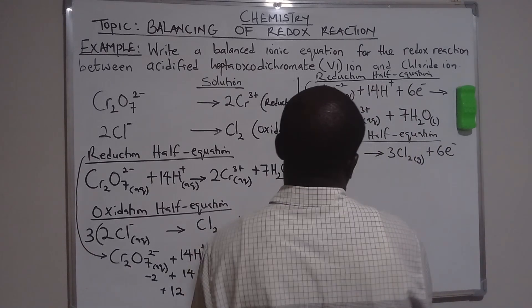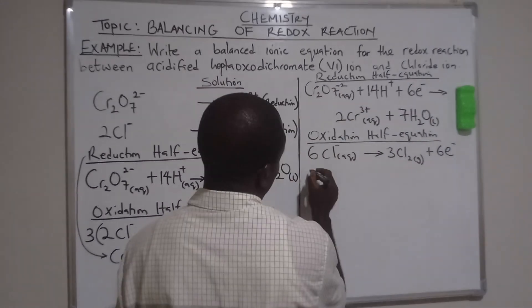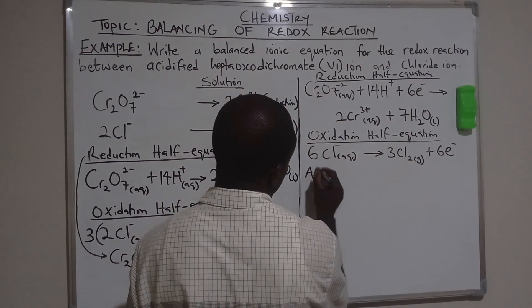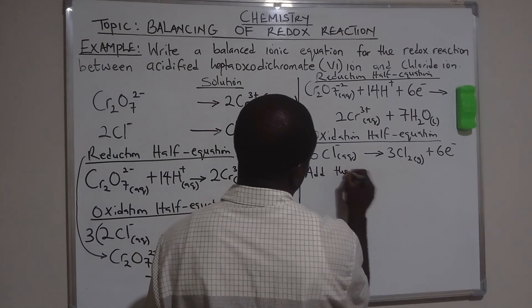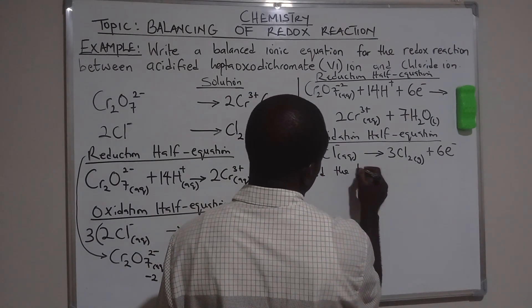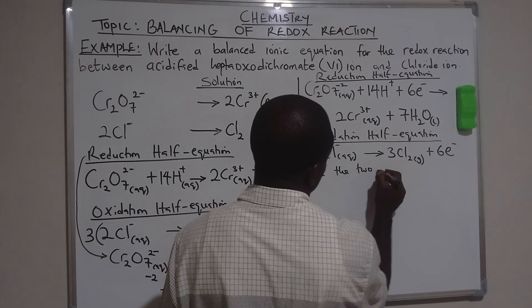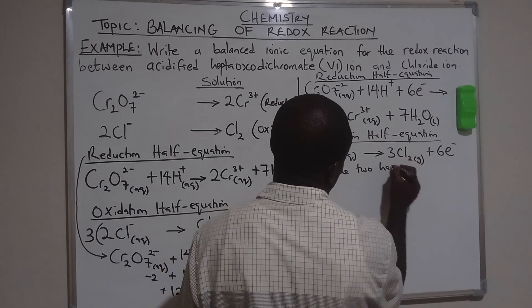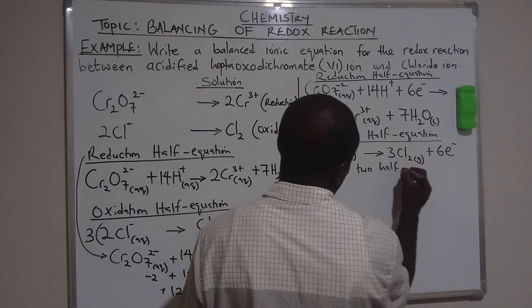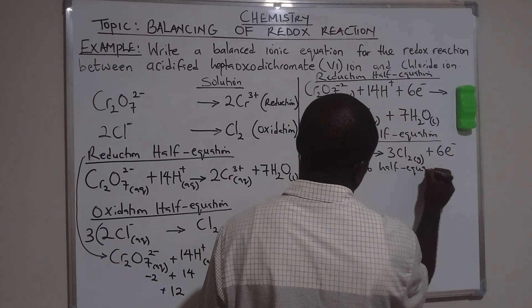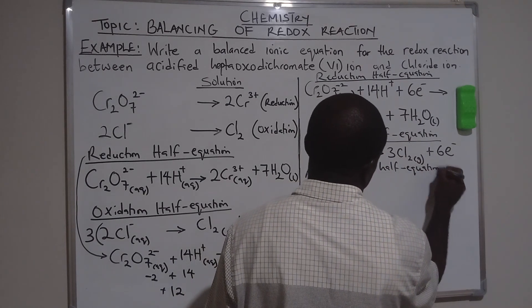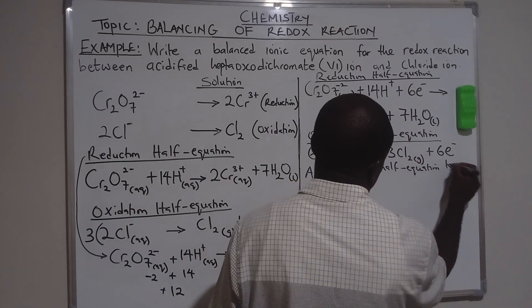Now add the two half-equations together, adding reactants and products separately.